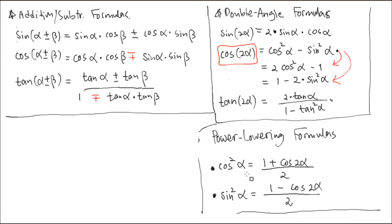If you happen to be looking at some periodic function occurring in nature — not written neatly algebraically — you can still write it in this form. But there's a possibility it doesn't end at a finite point; it goes forever. Those are called Fourier analysis — a very, very important part of mathematics and science. So here is the addition formula, and the double-angle formula follows from it. We look at cosine 2α and turn it into the power-lowering formula.